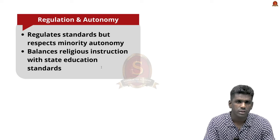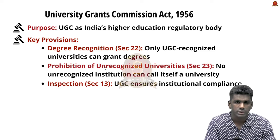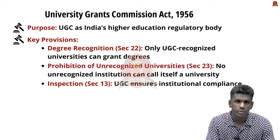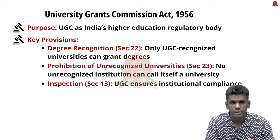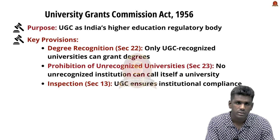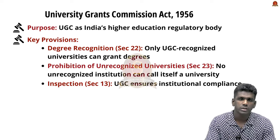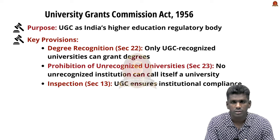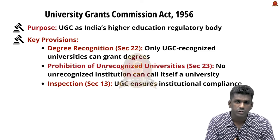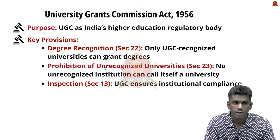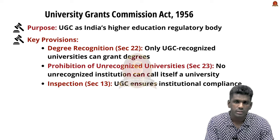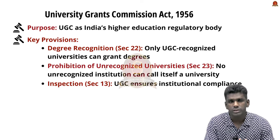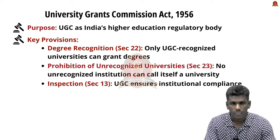Let us discuss some basic information about the University Grants Commission Act. The UGC Act of 1956 established the University Grants Commission as India's apex body to regulate and maintain higher education standards, operating under the Ministry of Education. UGC is empowered to set educational standards, conduct inspections, allocate funds and advise the government on education policy. Important provisions include degree recognition — only UGC-recognized universities can grant degrees — prohibition of unrecognized universities, funding eligibility for only UGC-approved institutions, and regulation of curriculum, faculty qualifications and student assessment.